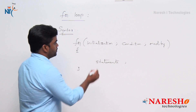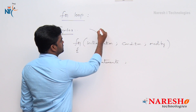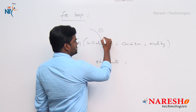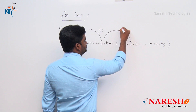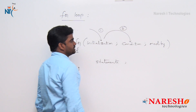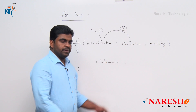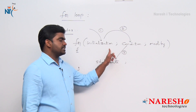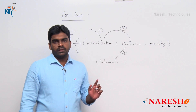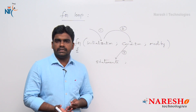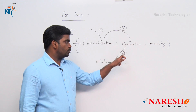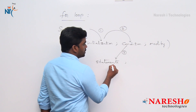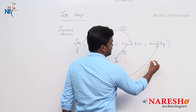How does it execute - the flow? First, the initialization statement executes. After execution of the initialization statement, it will go and check the condition. After the condition, if the condition is true, the control moves inside. If the condition is false, then it will terminate. Every loop terminates whenever the condition has failed. If condition is true, the control moves inside and it will execute the statements. After execution of these statements, it will go and check the modify statement.